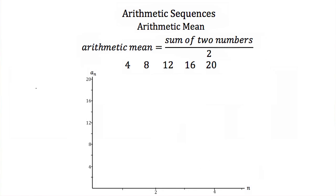Now the last thing we have to talk about with arithmetic sequences is the arithmetic mean. The arithmetic mean is the sum of two numbers over 2. We can use this to find the halfway point between two terms. Here again we're given the sequence 4, 8, 12, 16, and 20.